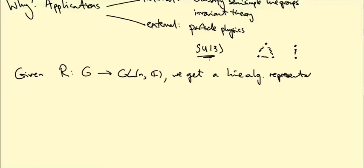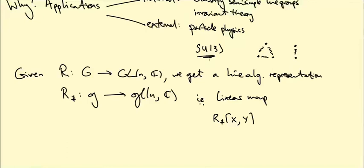R* from little g to gl(N,C). What do I mean by Lie algebra representation? I mean a linear map which preserves the Lie bracket, so R*(x,y) = [R*(x), R*(y)]. I have to be slightly careful what I mean about linear here, because gl(N,C) is a vector space over the complex numbers; it's also a vector space over the real numbers. I can rescale a complex matrix by a real number, and little g is just a vector space over the real numbers. So I really have to be talking about real linear maps here. In other words, R*(λx) = λR*(x) where λ is real.